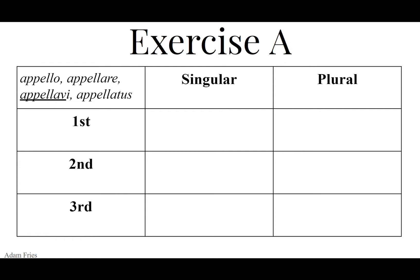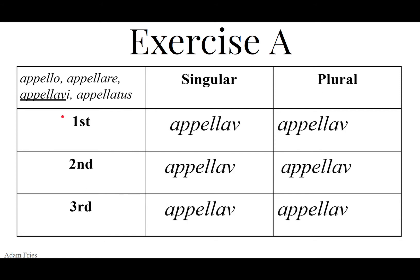So make sure you know the principal parts — they're right there. Appello, appellare, appellavi, appellatus, which means to call by name or to name. So how do we form this in the perfect tense, Latin's perfect tense, corresponding to English's simple past or punctual past? We go to the third principal part, chop off the I to get the verb's perfect stem: appellav.